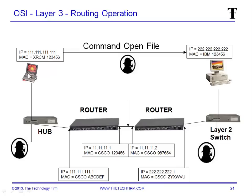So here's our laptop and he's going to send a command to the server — this command is 'open file.' These little Sherlock Holmes icons represent our tools — Wireshark, Sniffer, Protocol Analyzer, any kind of tool. We've got a hub, which is a layer one device on the OSI model, two routers which are layer three, and a layer two switch — a little bit of everything.